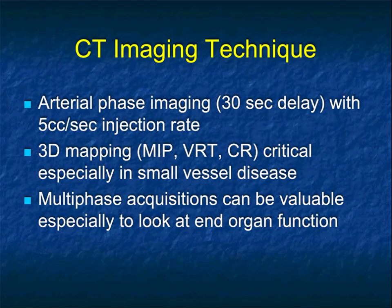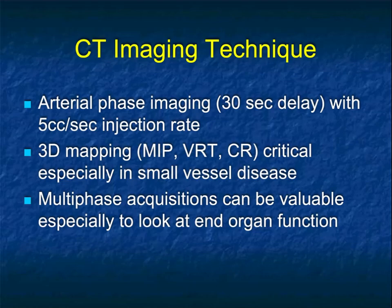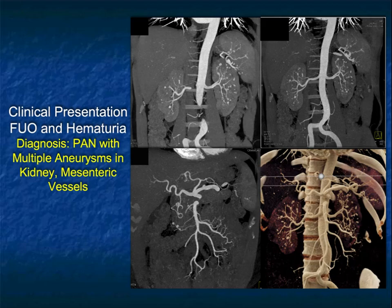In terms of CT technique, typically arterial phase alone is all you need, with about a 30-second delay. Though sometimes, particularly when we want to look at other organs — like in polyarteritis nodosa when you want more information about the kidney — venous or occasionally delayed phase imaging will be necessary. 3D mapping is important because looking at vessel disease only on axial imaging can be very limited, particularly in areas like the arch and branching mesenteric vessels. MIP is particularly helpful, but volume rendering and cinematic rendering are also very helpful. Multi-phase acquisition can be valuable.